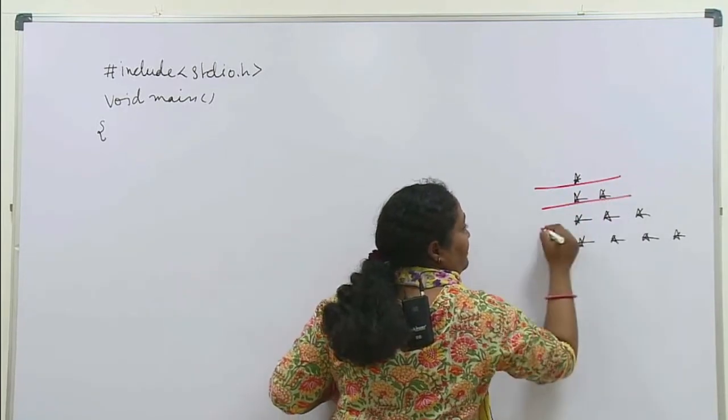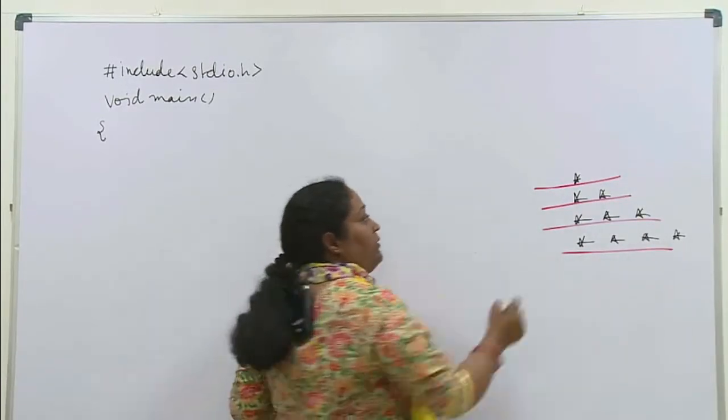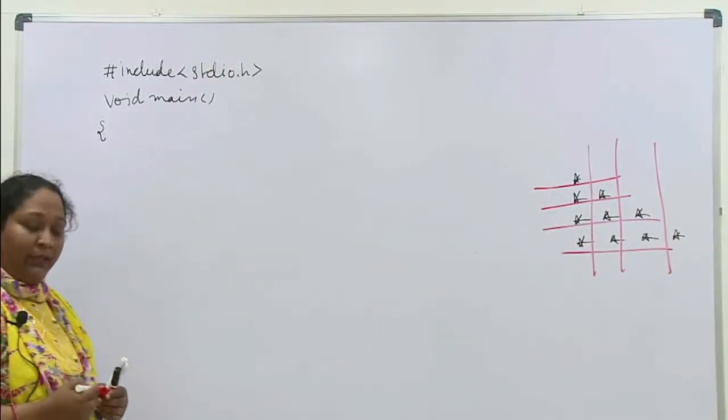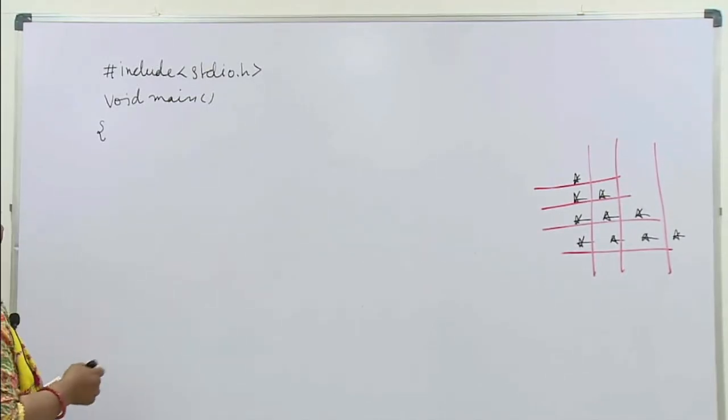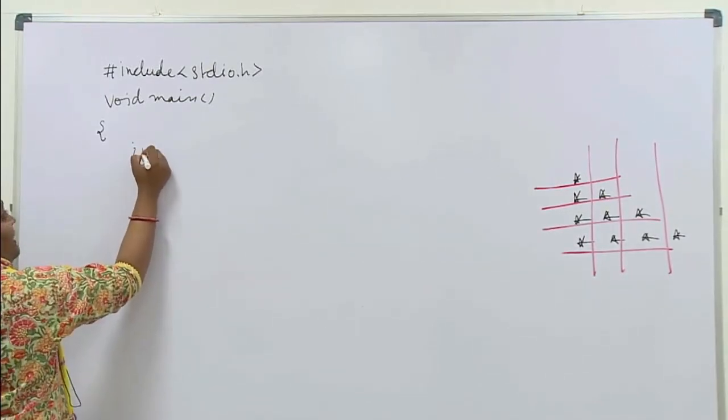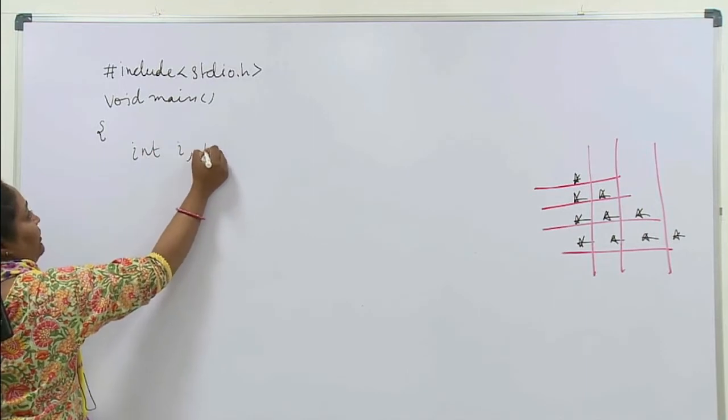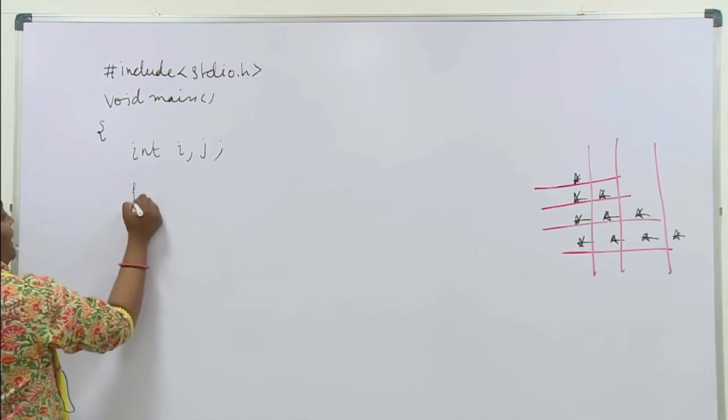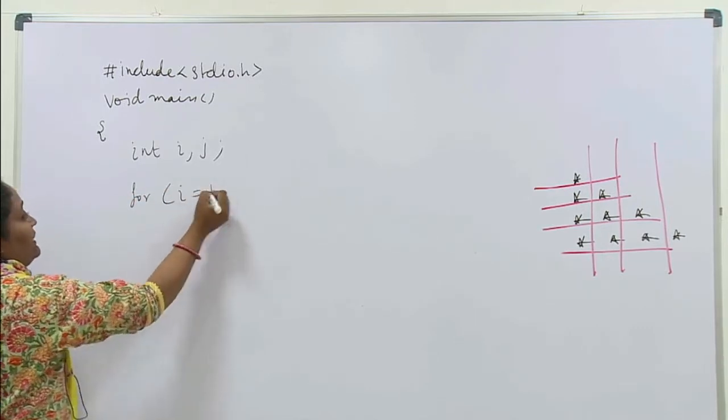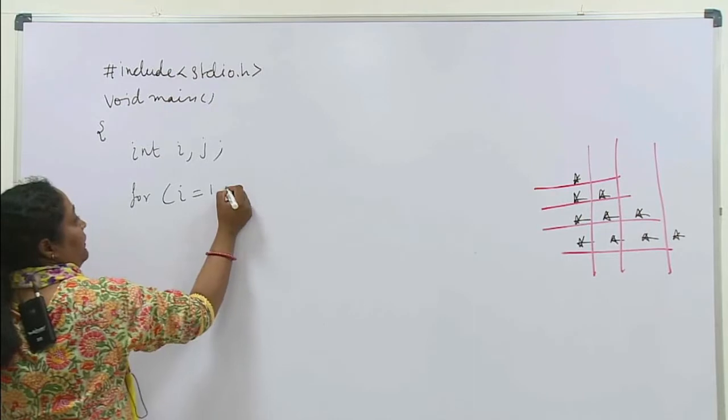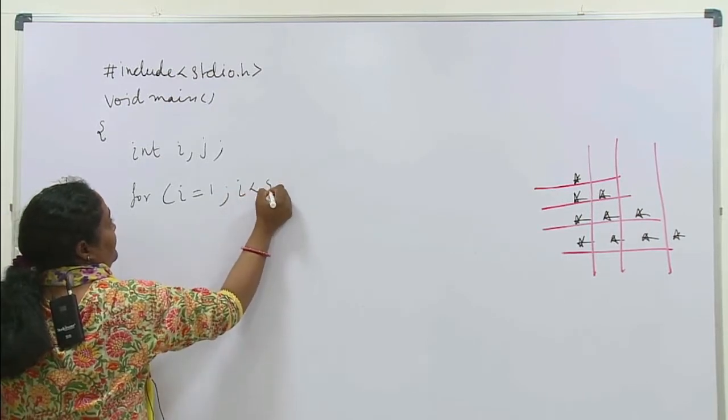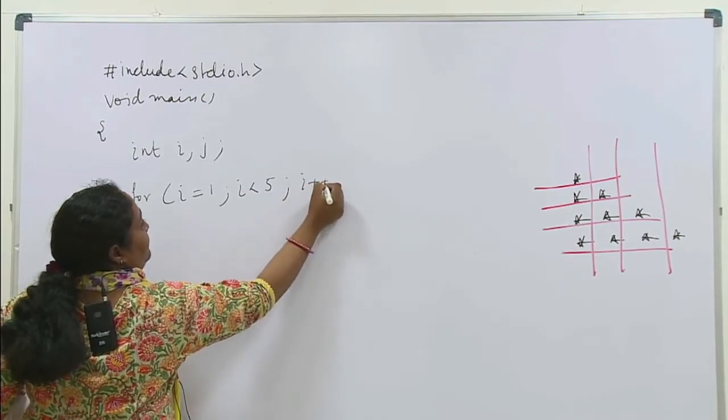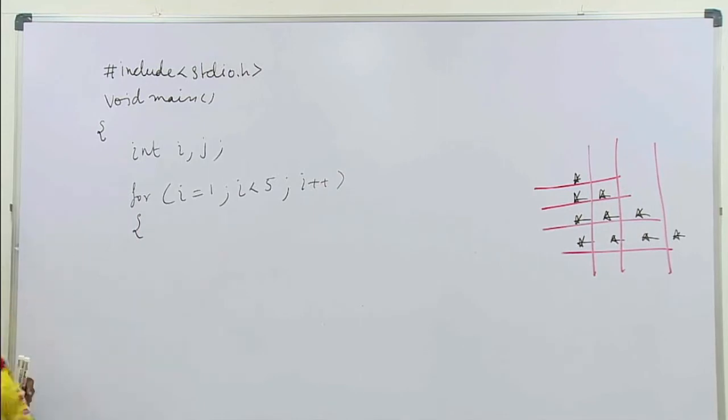And one loop who can control the vertical line. One loop is going to control the rows and one is going to control the columns. Dekho, for i equals 1, i less than 5, i++. Ye for loop shuru hua.